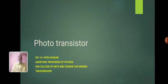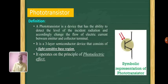Let us today see about the phototransistor. Phototransistor is a device that has the ability to detect the level of incident radiation and accordingly changes the flow of electric current between emitter and collector terminals. Depending upon the incident radiation, upon the intensity of the incident radiation, the flow of current changes.